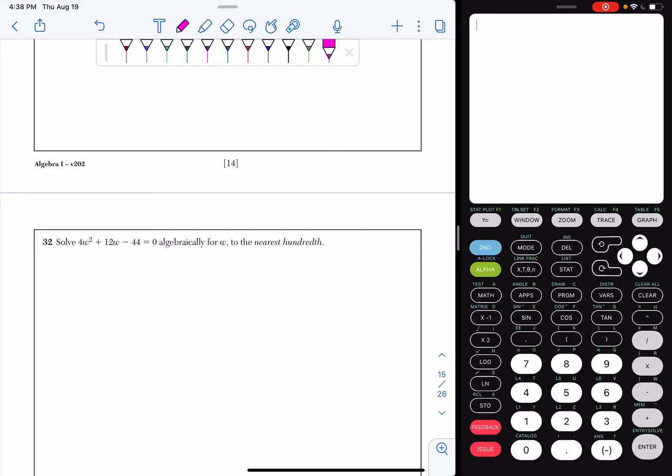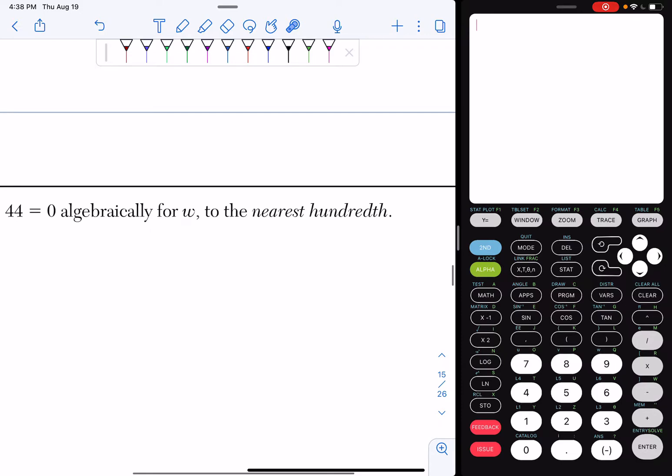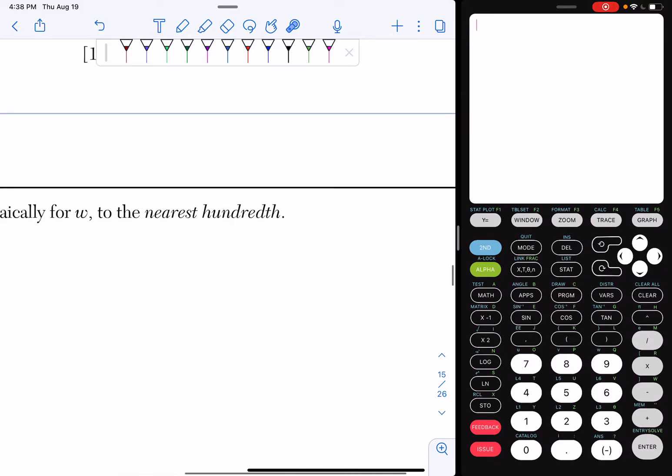Question number 32. Solve 4w squared plus 12w minus 44 equals 0 algebraically for w to the nearest hundredth. So before we go into this whole process of solving it, what we're going to do is say to the nearest hundredth means two decimal places out. So make sure that you round out two decimal places.